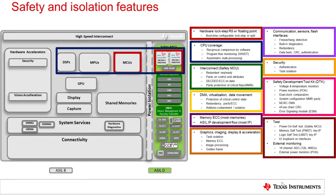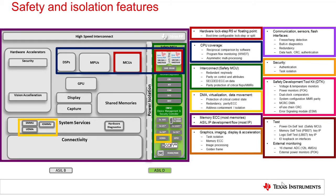Lockstep R5 cores are available in both the main domain and the safety MCU domain. Multiple heterogeneous cores can be leveraged to cross-check critical safety-related calculations. Windowed watchdog timers are available on all CPUs to monitor execution flow. The interconnect bus fabric throughout the safety MCU, and in some derivatives a portion of the main fabric, has additional redundancy and error correction for robust operation. The DMA and data movement IP throughout the architecture include ECC and protection of critical state for robustness and address containment for isolation. Most memories across the device contain ECC or parity, and peripheral IPs also follow development flows required for safety.